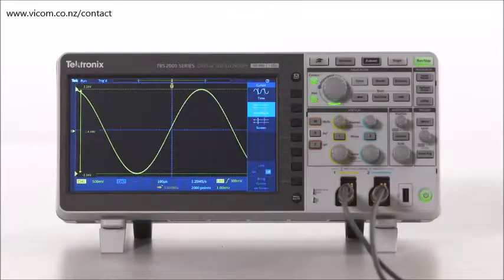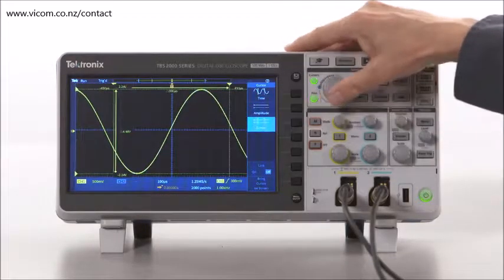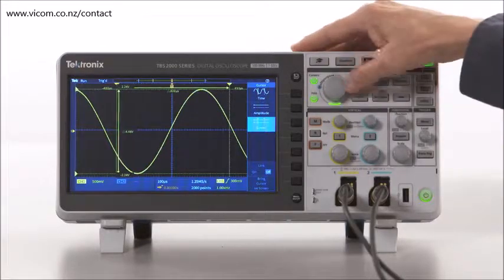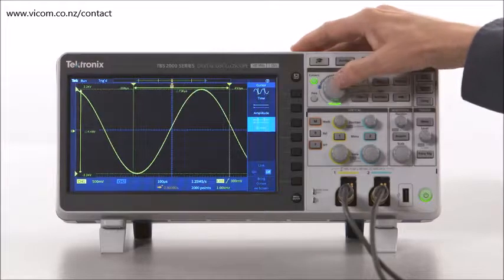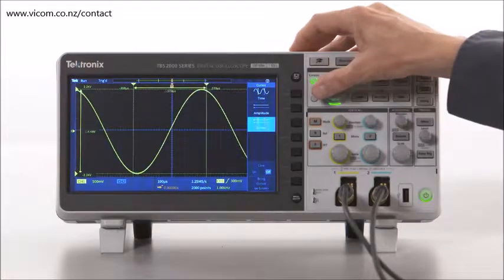The third type of cursors, the screen cursors, provide two time and two amplitude cursors that can be individually positioned to obtain time and amplitude measurements.